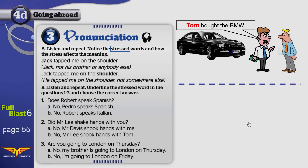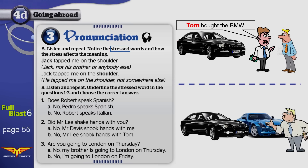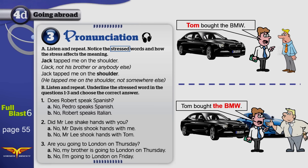Now, look at the second example. This man heard that Tom bought a car, but he doesn't know which car Tom bought. So he asked, 'Which car did Tom buy?' And the man gave him the answer: 'Tom bought the BMW.'